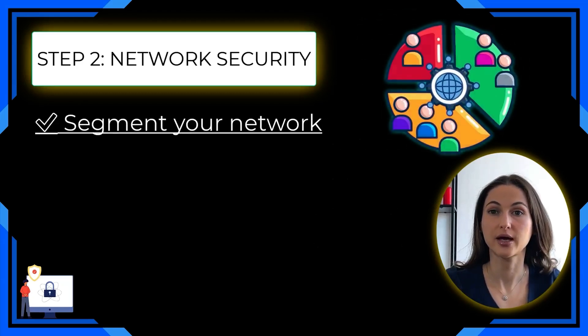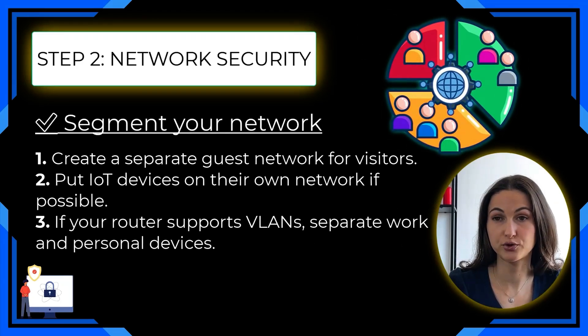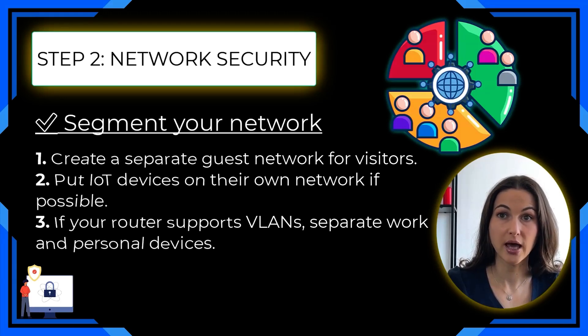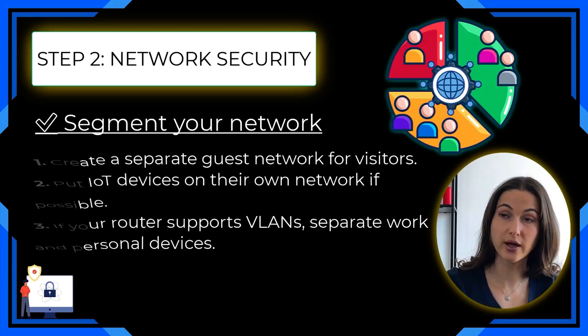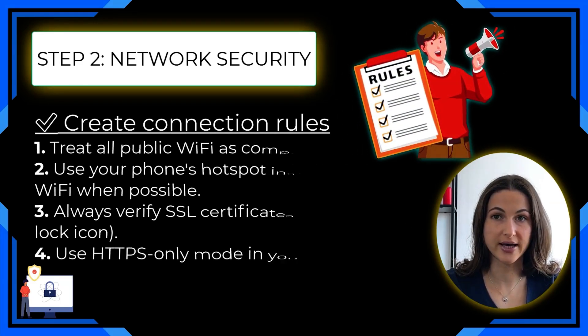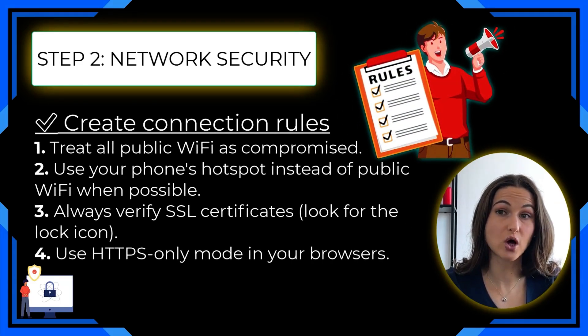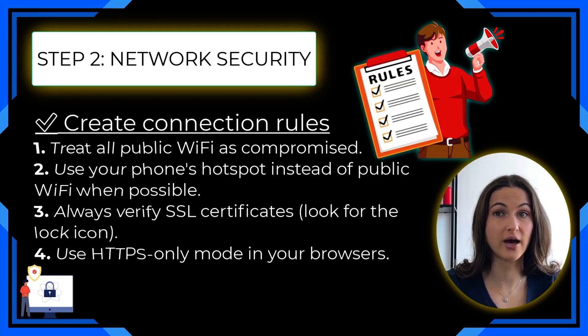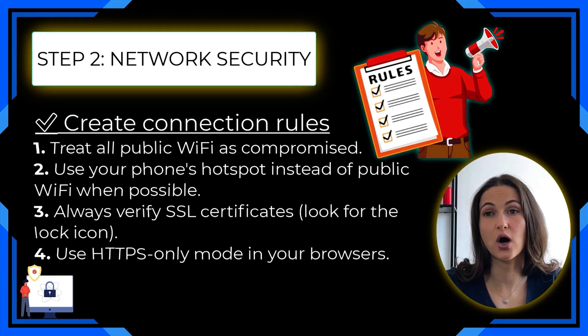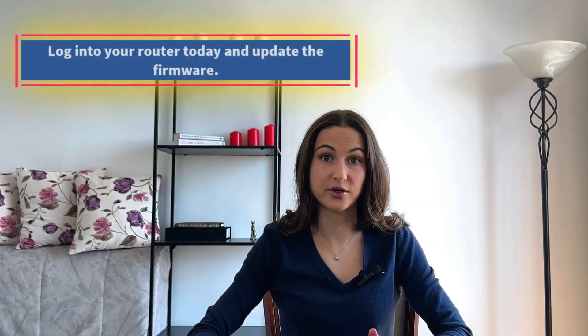Next, segment your network. Create a separate guest network for visitors and put your IoT devices on their own network if possible. If your router supports VLANs, separate work and personal devices. For connection rules: treat all public Wi-Fi as compromised, use your phone's hotspot instead when possible, always verify SSL certificates by looking for the lock icon, and use HTTPS-only mode in your browser. Your immediate action item: log into your router today and update the firmware.